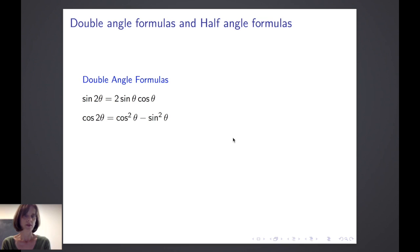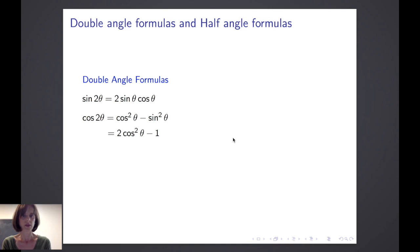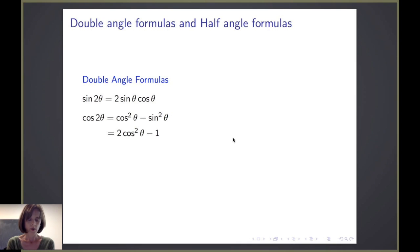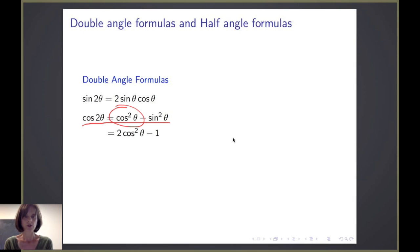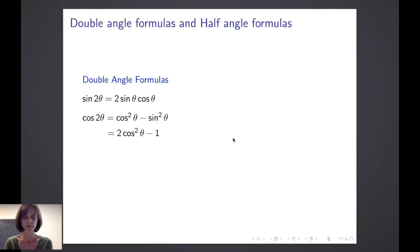If we use our basic Pythagorean identity and replace sine squared theta with 1 minus cosine squared theta, we get that cosine of 2 theta is equal to 2 cosine squared theta minus 1. Or in cosine 2 theta equals cosine squared theta minus sine squared theta, if we substitute cosine squared theta with 1 minus sine squared theta, we get that cosine of 2 theta is 1 minus 2 sine squared theta.